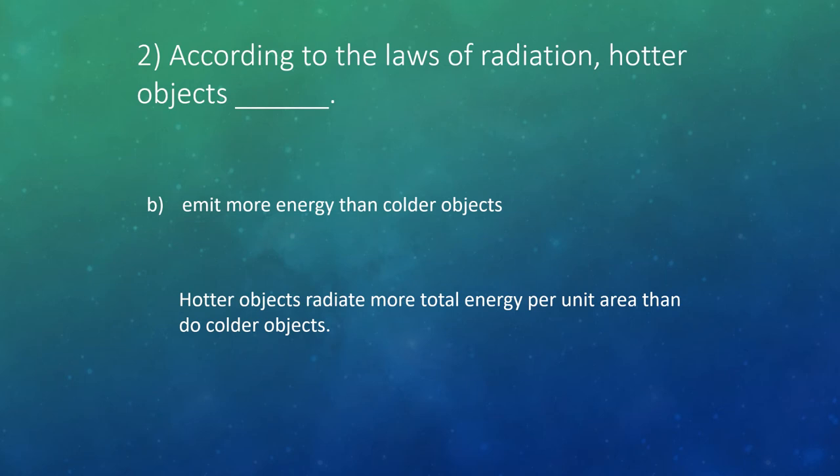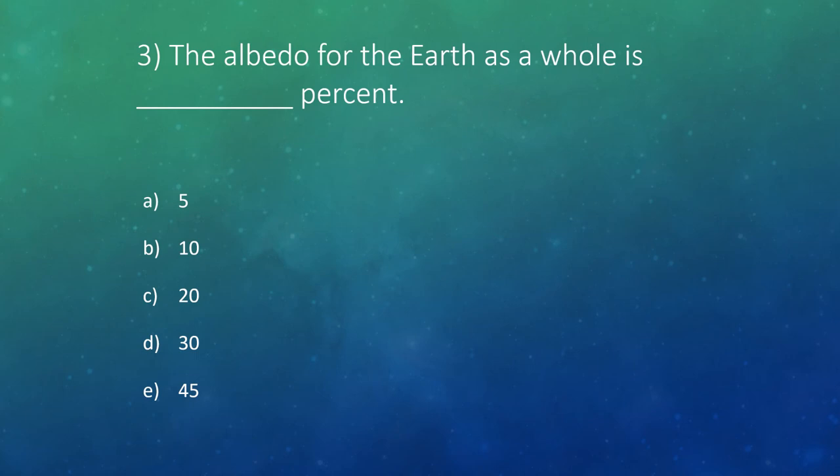Question three: the albedo of the Earth as a whole — albedo being the whiteness, or how much is reflected back away — is about 30%.